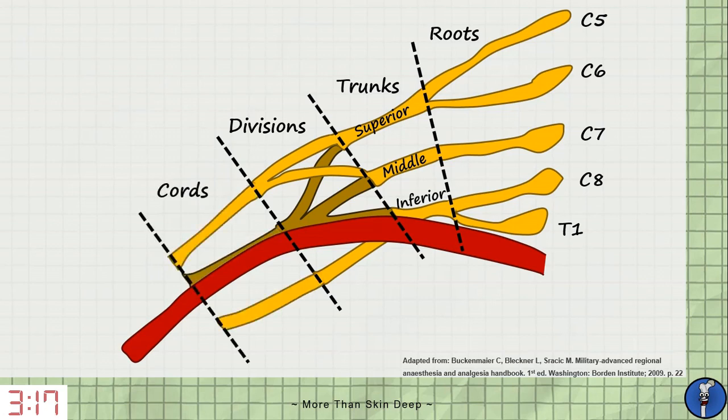The cords are described based on their relationship to the axillary artery, so we have lateral, posterior and medial cords. These are simply the short nerve segments that are produced by the divisions.